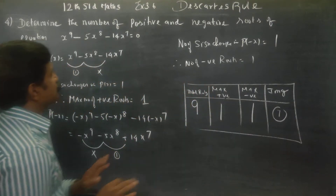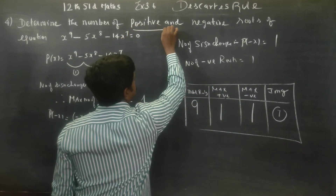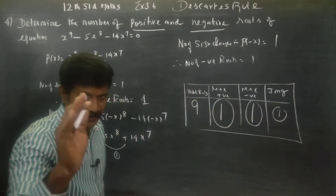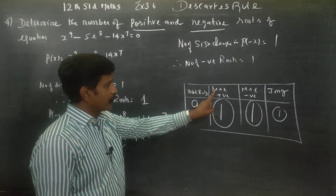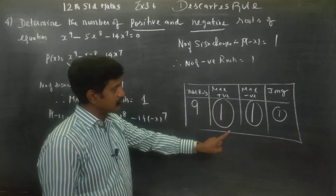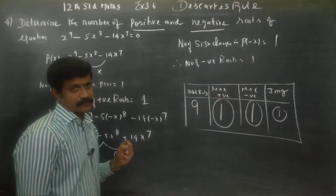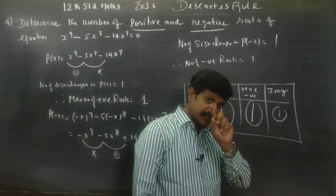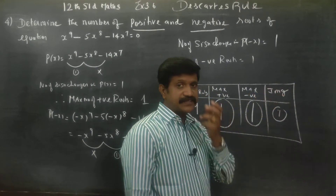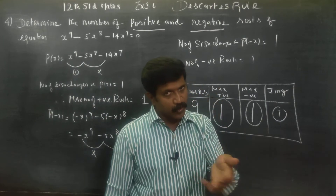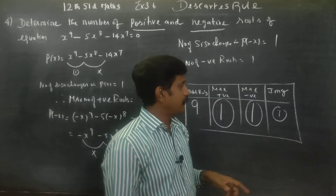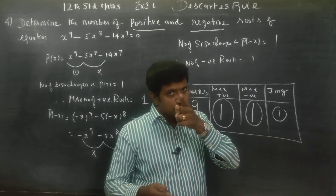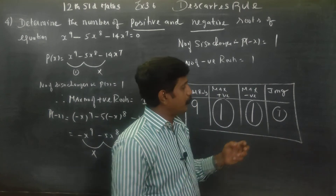So to summarize: maximum positive roots is 1, maximum negative roots is 1, and imaginary roots is 7. Imaginary roots always occur in conjugate pairs.